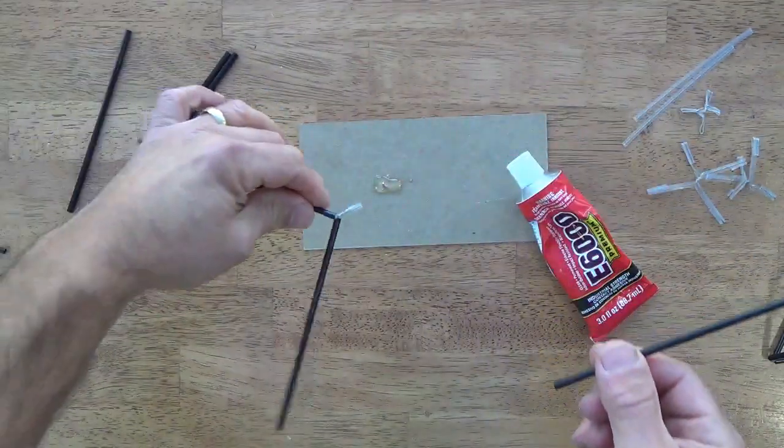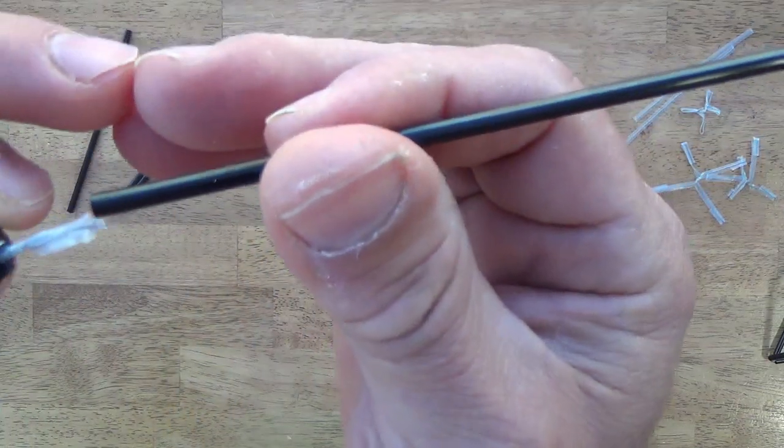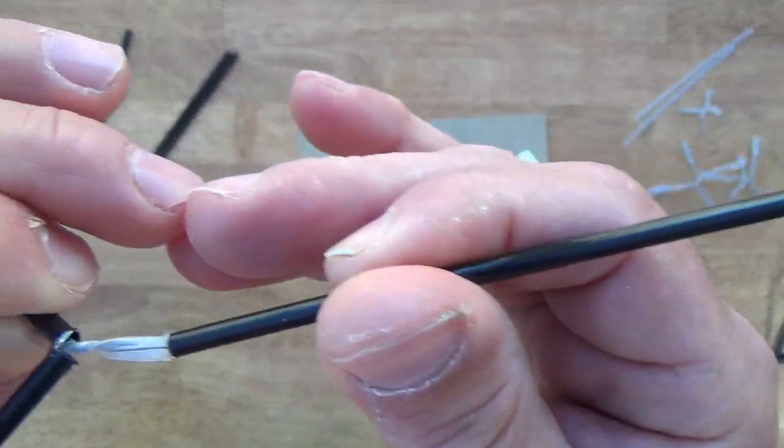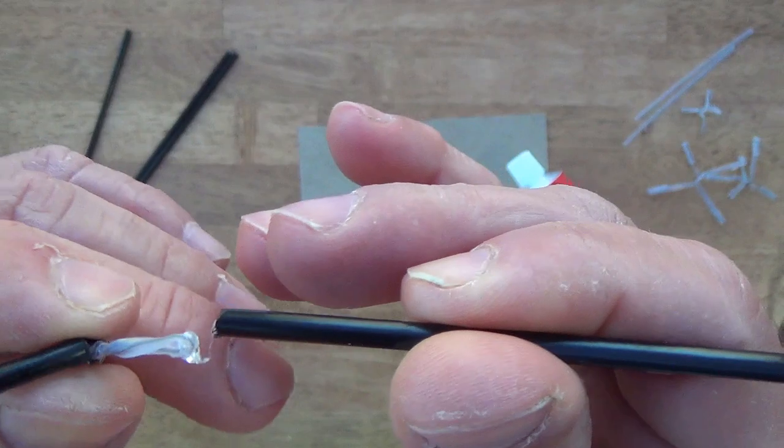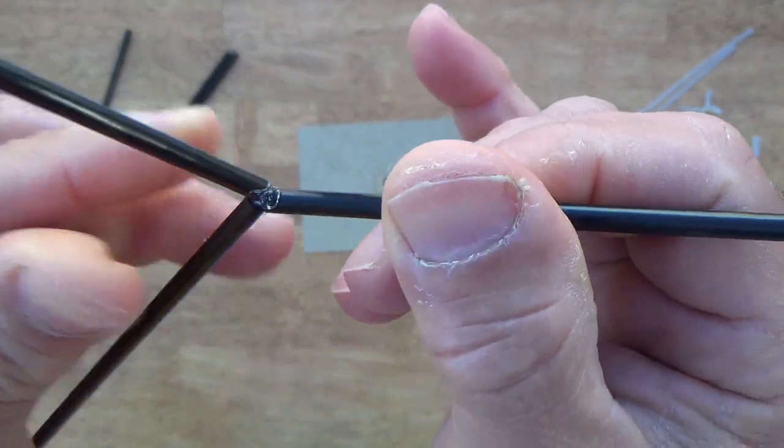I'll do that with this one too, just to show you. A little dab there and insert that here. There we go. So we'll see what that looks like. There's a little drop of glue there, no big deal.